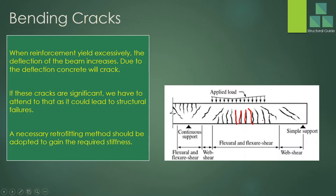In such a situation we have to take action. We have to assess the beam to determine whether it is a bending crack or another type. If it is a bending crack, we have to do retrofitting and improve the stiffness of the beam. We may increase the size, fix a plate — there are many methods to enhance the stiffness of the beam. Bending cracks require careful attention.